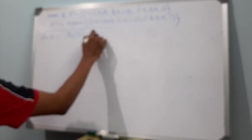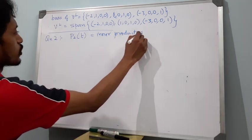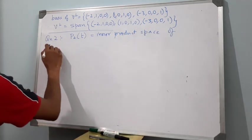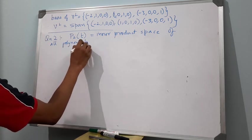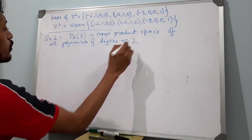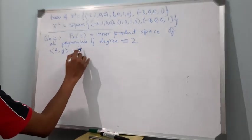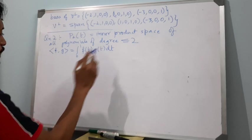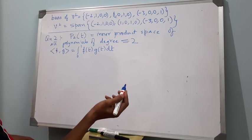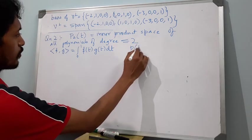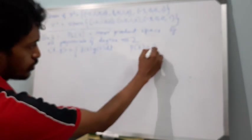Now suppose we consider the polynomial space P2(t), which is the inner product space of all polynomials of degree less than or equal to 2. The inner product defined is the inner product of f and g equals the integral from 0 to 1 of f(t)·g(t) dt. And we have p(t) equal to 2t + 1.